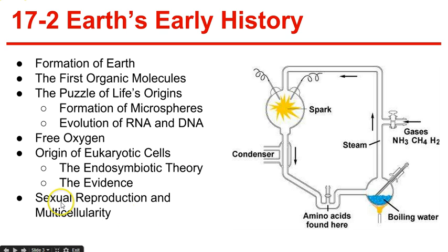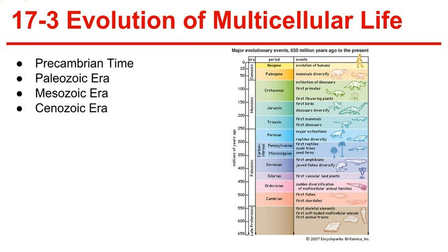Sexual reproduction and multicellularity enabled evolution to advance even further because of the shuffling of the genetic deck, and also increased the number of genes in the population. 17-3: Evolution of Multicellular Life. During the Precambrian, simple anaerobic forms of life appeared, followed by photosynthetic forms and then multicellular forms. Life only existed in the sea; there was no land life.